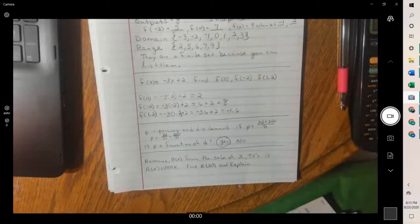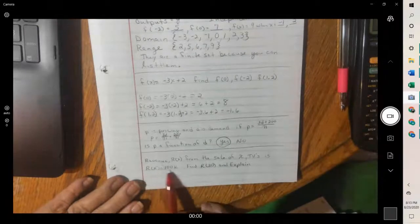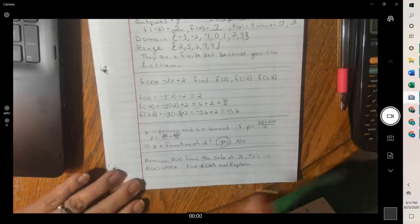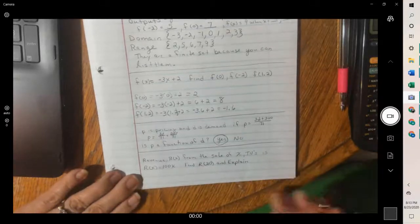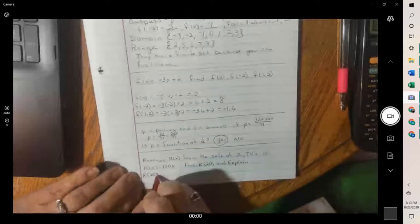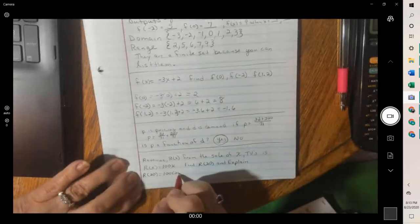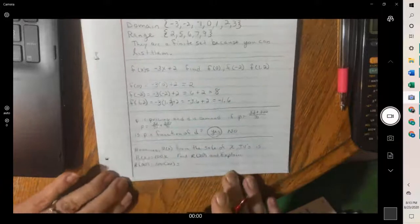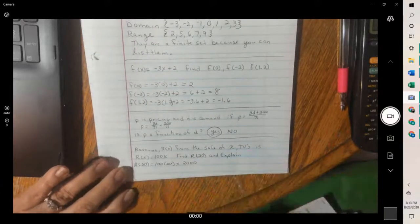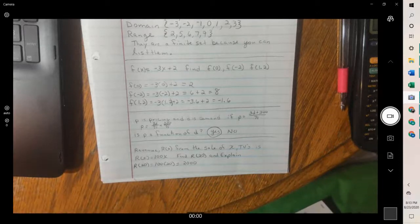Next one, revenue r of x from the sale of x televisions is r of x equals 100x. So x is the number of televisions sold. When we plug that in, we get the revenue that we get from that. Find r of 20. So if we plug in 20, so if we multiply that, we get 2,000.